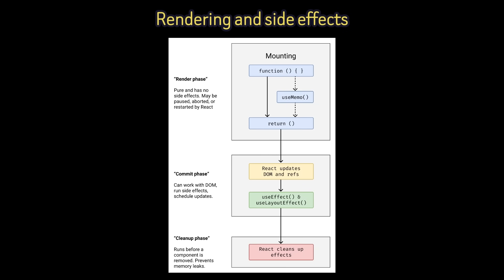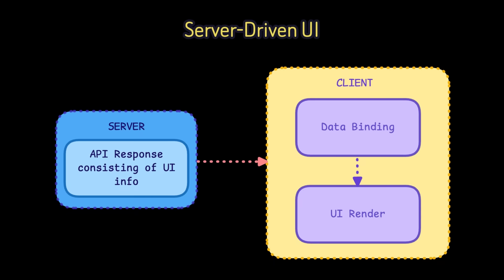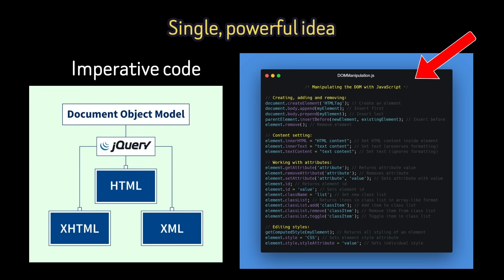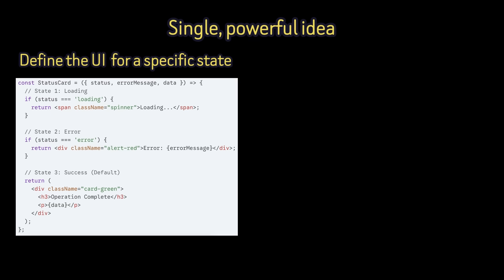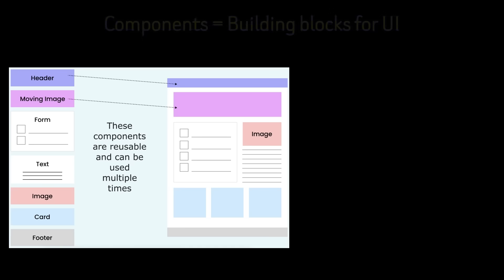By treating the UI as a function of state and enforcing a clear separation between rendering and side effects, React made UI code predictable, testable, and scalable. Over time, this model proved flexible enough to support web, native mobile via React Native, concurrent rendering, and server-driven UI, all while preserving the same conceptual foundation. At its foundation, React is built on a single powerful idea: the user interface is a deterministic function of application state. Instead of writing imperative code that says 'find this DOM node and update its text when X happens,' you describe what the UI should look like for a given state, and React ensures the real DOM matches that description.